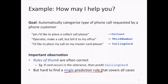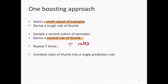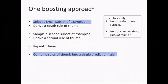One way to do this is boosting: you boost the accuracy of many rules of thumb. You select a small set of examples, stare at them, and invent a rule of thumb. Then you find another subset, get another rule of thumb, and repeat this T times to get T rules. You then combine all of these into a single prediction rule. The real question is how to select these subsets and how to combine them — if you can answer those two questions, you have an ensemble approach.